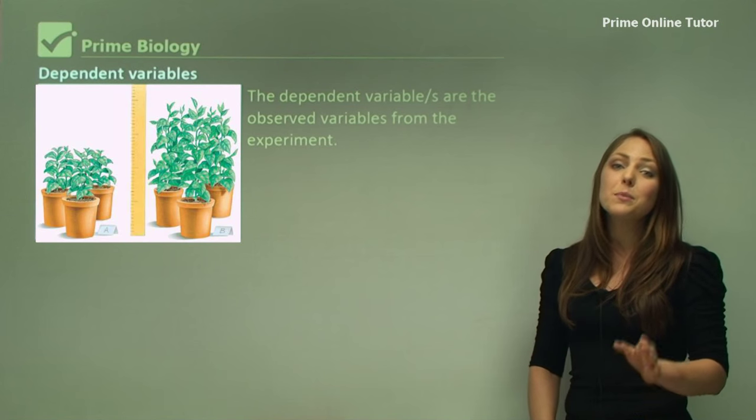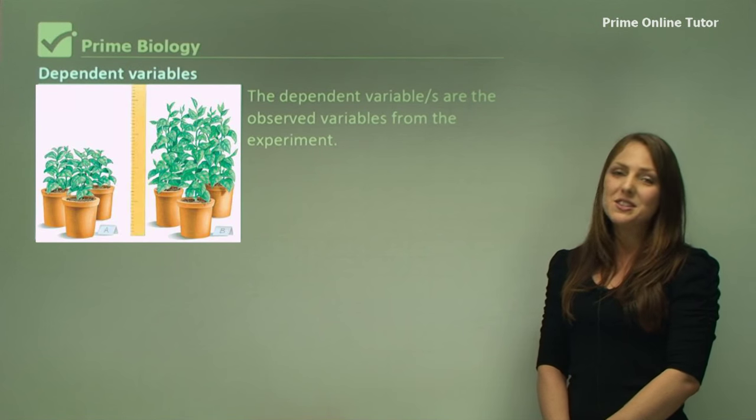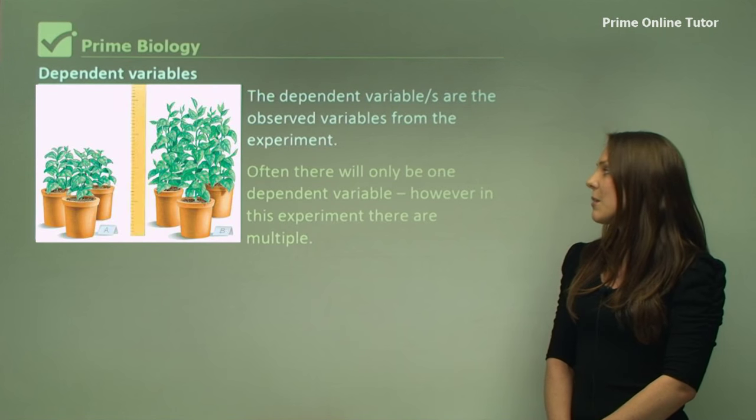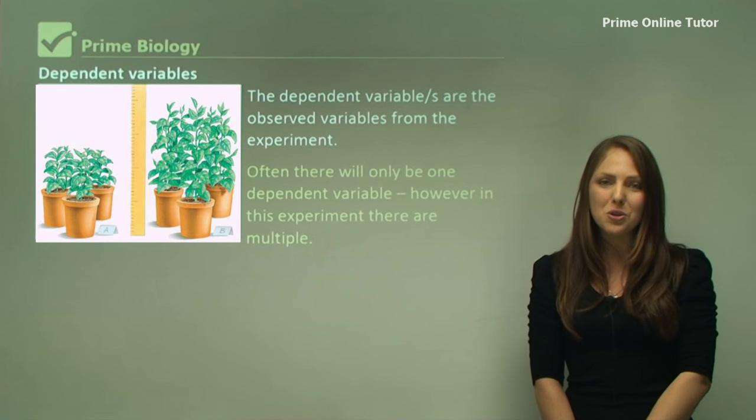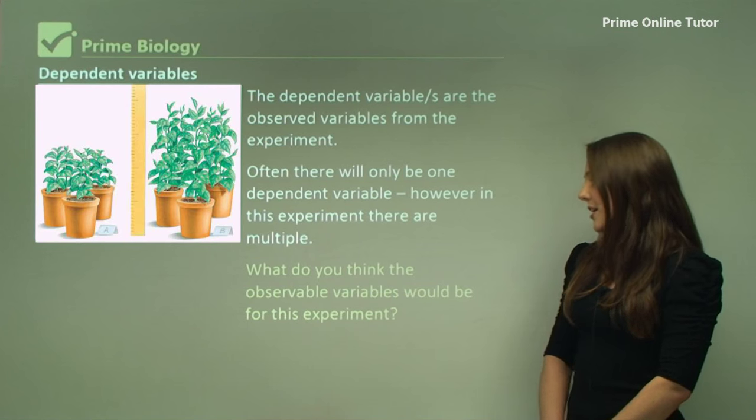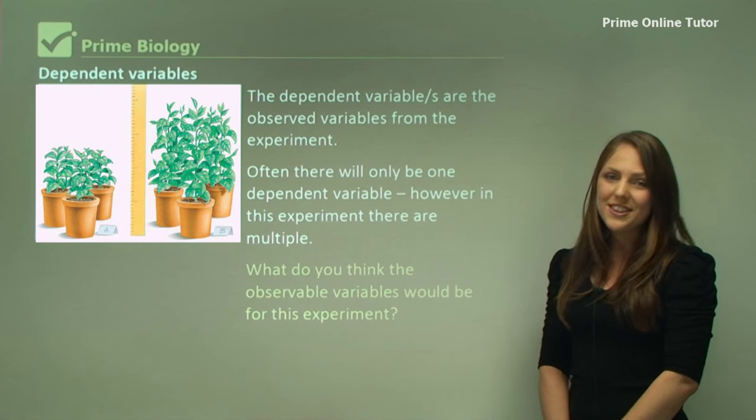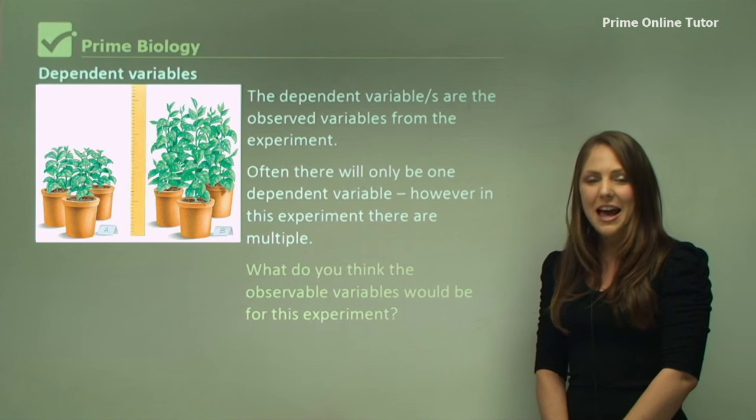The dependent variables are the observed variables from the experiment. Often there will only be one dependent variable. However, in this one in particular, there's multiple dependent variables. What do you think the observable variables would be for this experiment? Pause now and have a think.